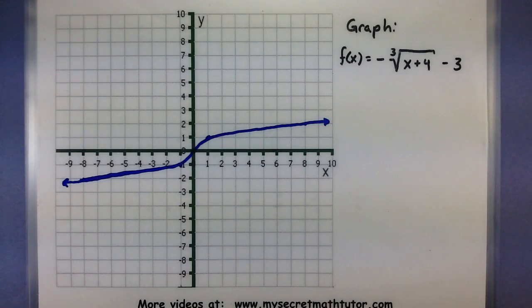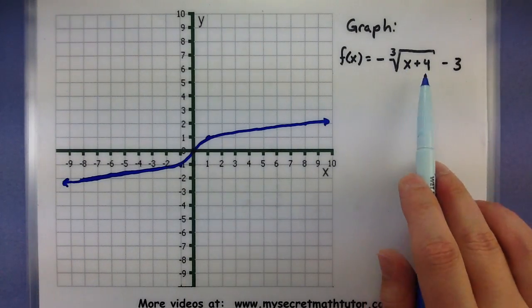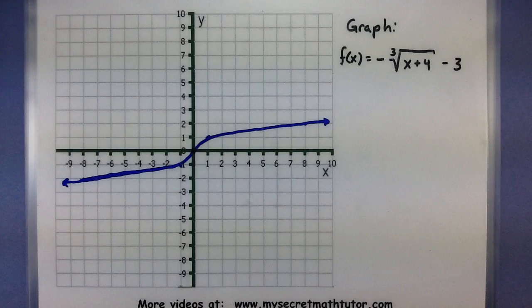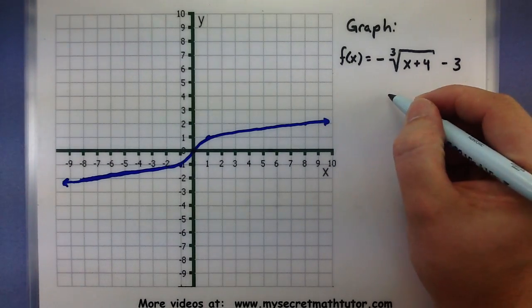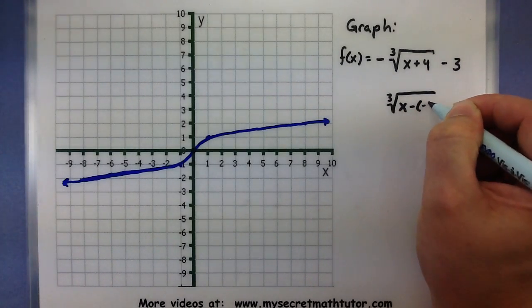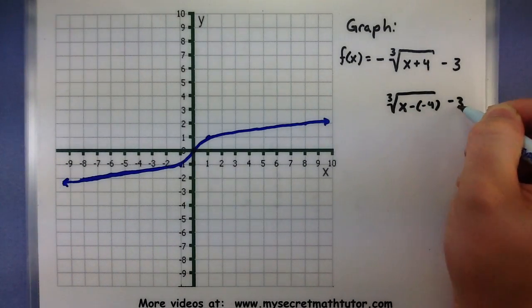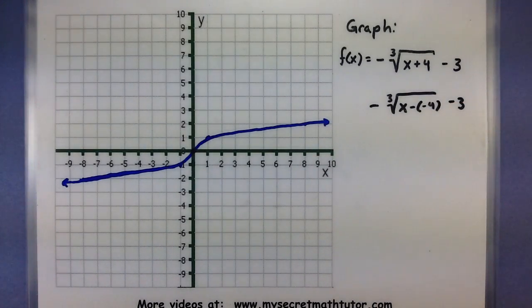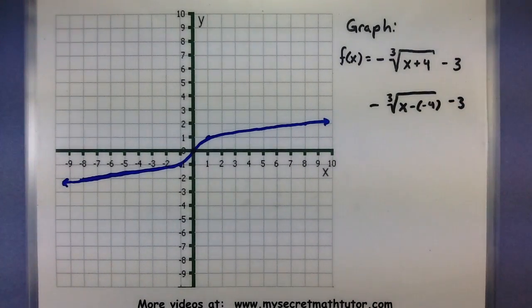Let's see where it needs to move. So starting with our inside here, we have an x plus 4. So normally this would be written like x minus a value. And the only way I could write x minus a value in there is if I had x minus a negative 4. So if you remember my chart from before, this is telling me that I need to go left.